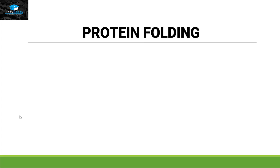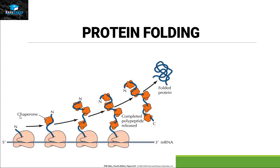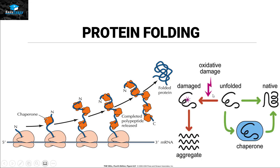Protein folding is another type of post-translational modification. There are two types: one where folding happens by itself, and one where a helper protein called a chaperone is needed. Chaperones attach themselves to the protein and help it fold into the correct form. As shown in this picture, the unfolded protein enters the chaperone, which folds it into a native, active state.